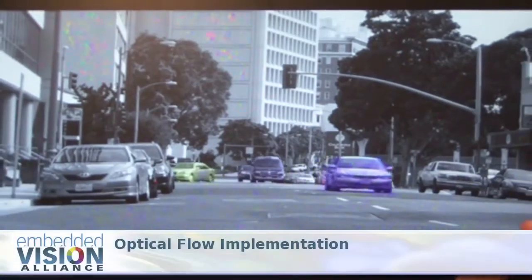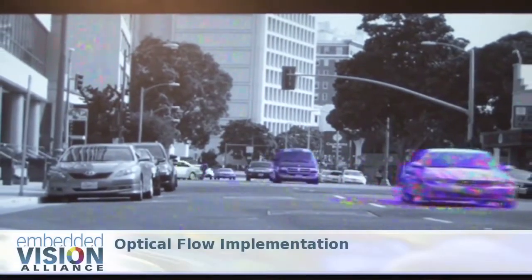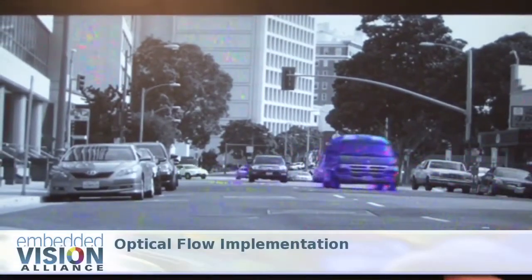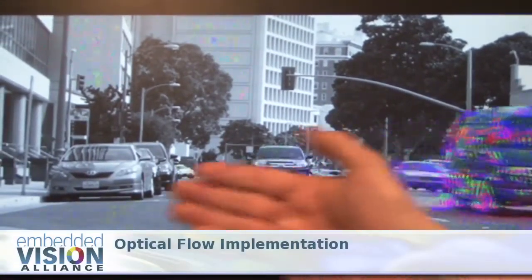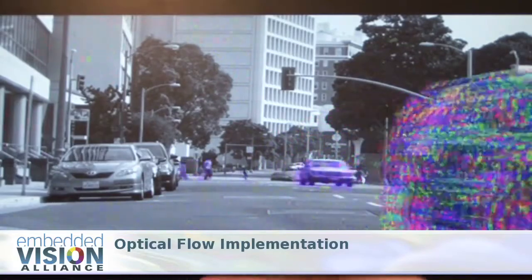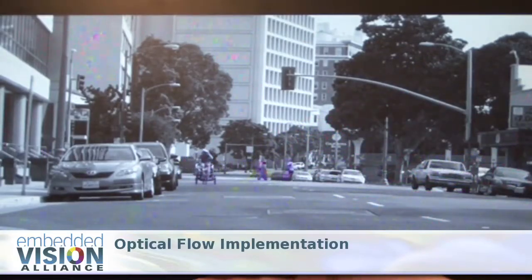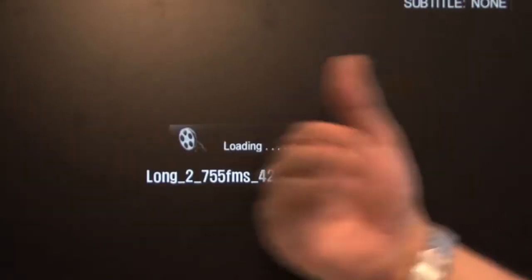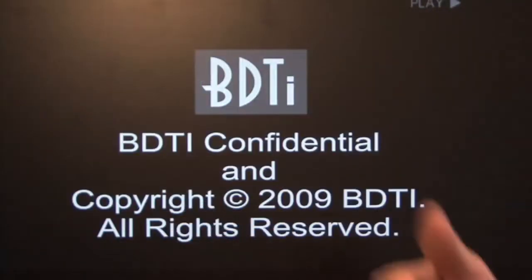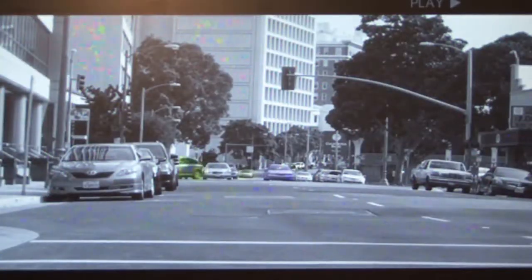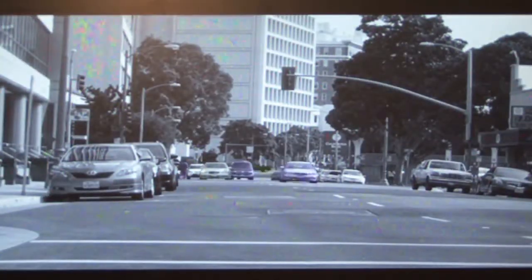The faster the movement to the right, the brighter the pink color. Likewise, when an object is moving to the left, green pseudo-color is generated to indicate movement to the left, and the brighter the green, the faster the movement.